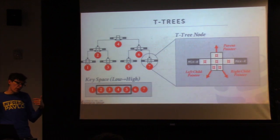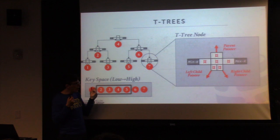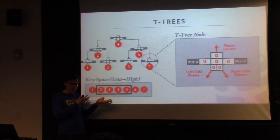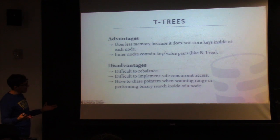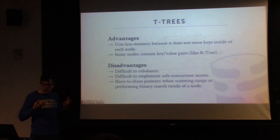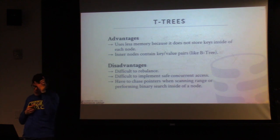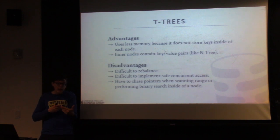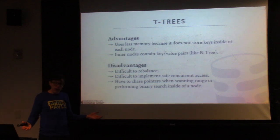Their argument was that this tradeoff was acceptable because dereferencing a pointer versus saving memory storage overhead was worth it. The advantage is that we're storing less data — just pointers — making the index more compact. And the inner nodes contain key-value pairs like a B-tree, so for an exact key lookup you may not have to traverse all the way to the bottom. But obviously this has big problems — otherwise people would still be using it.